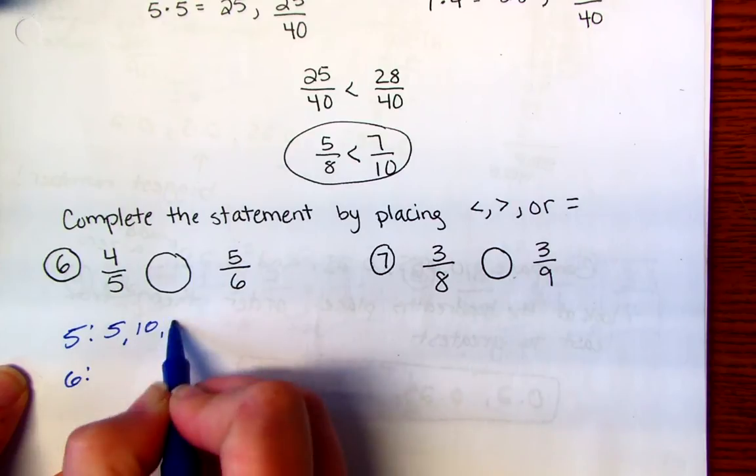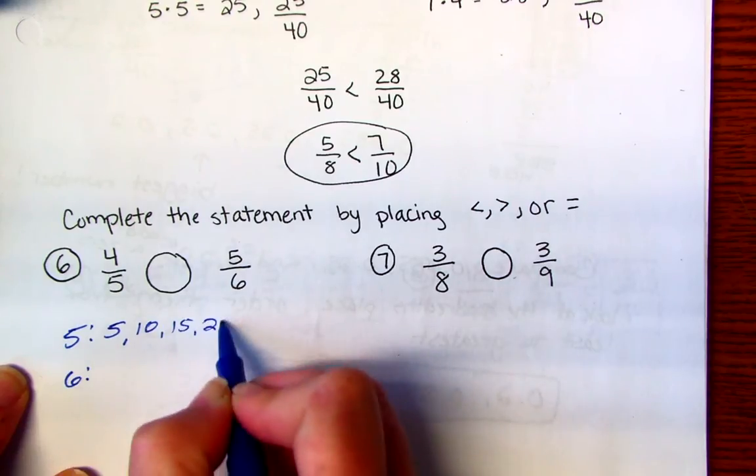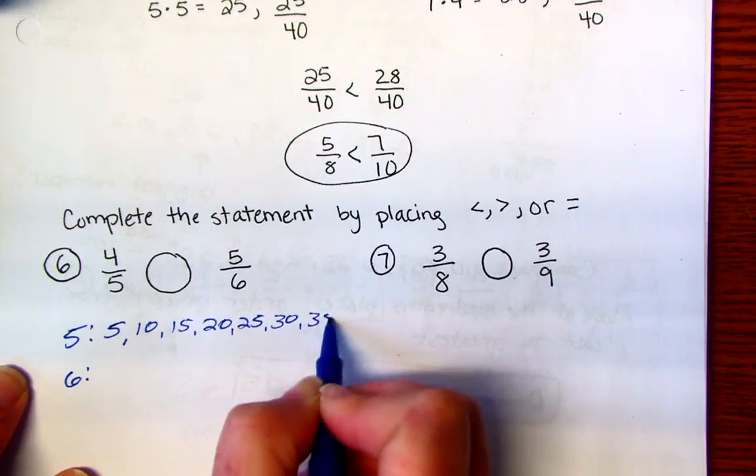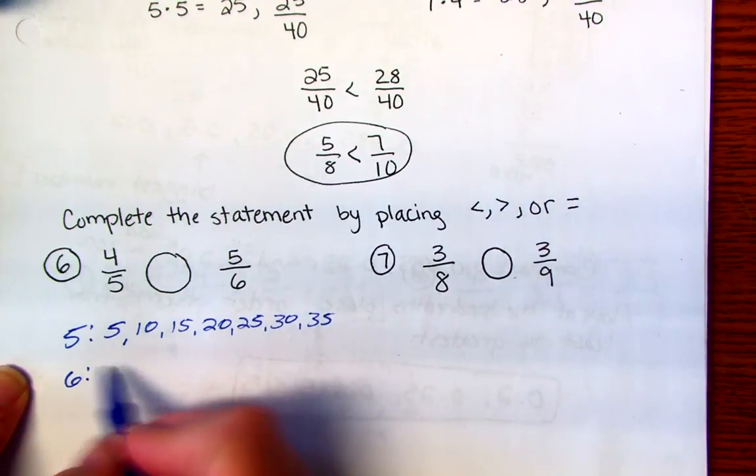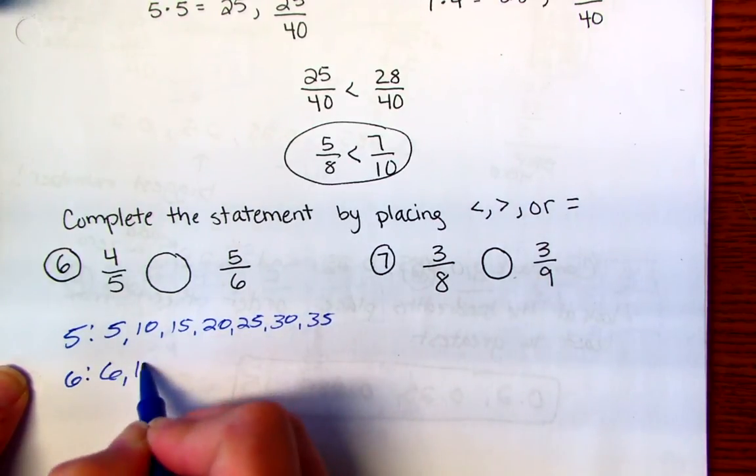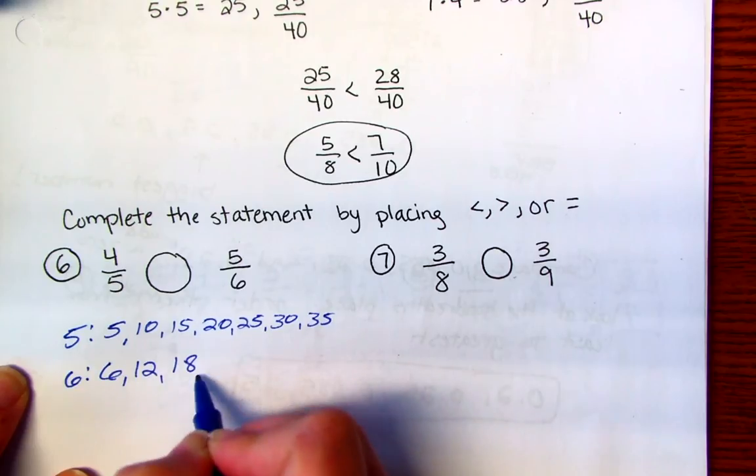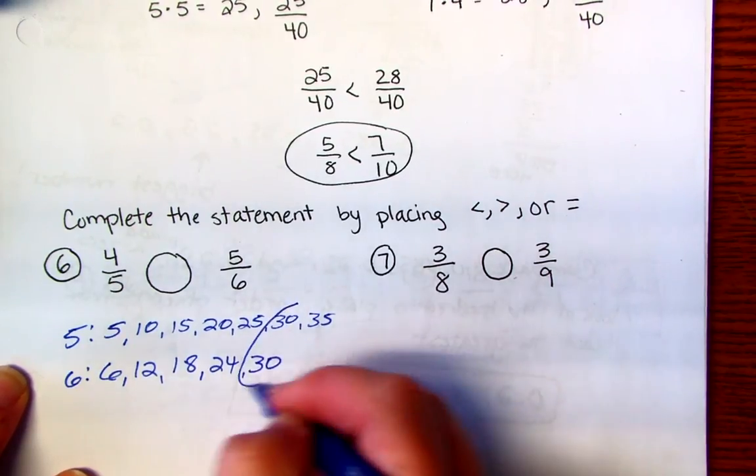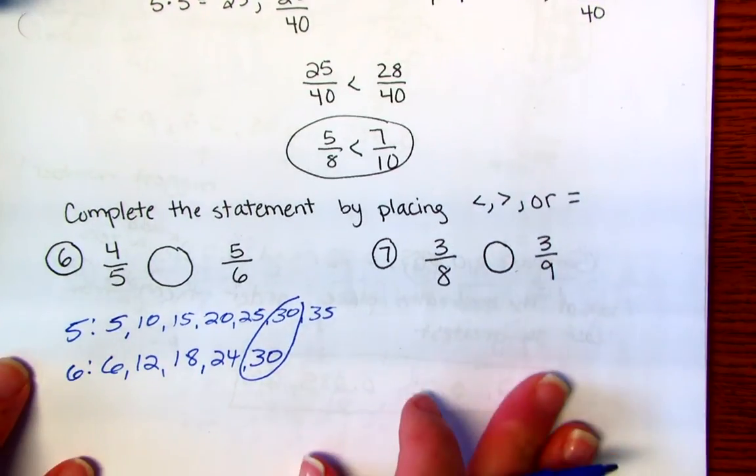So write down your freebie. 5, 10, 15, 20, 25, 30, 35. And I'm going to go ahead and stop right there and then I'll do the 6. So 6, 12, 18, 24, 30. Oh, I don't need to go anymore because I know that my least common denominator is 30.